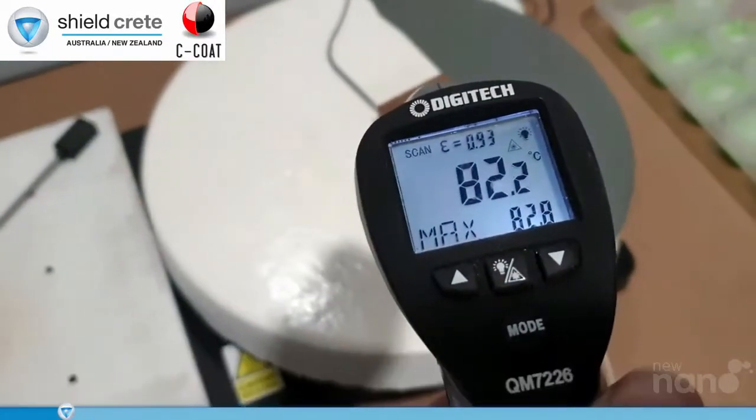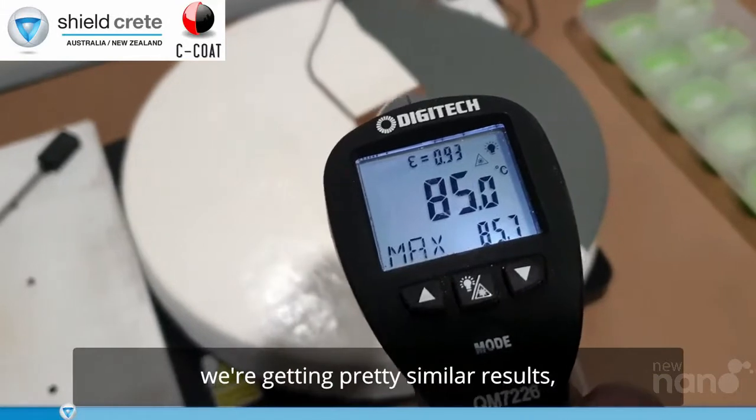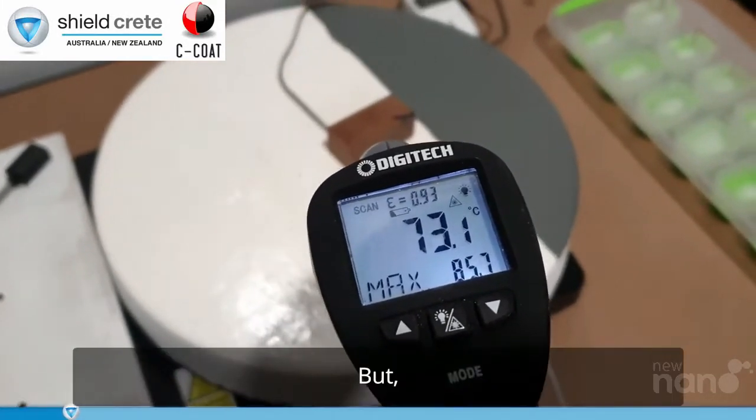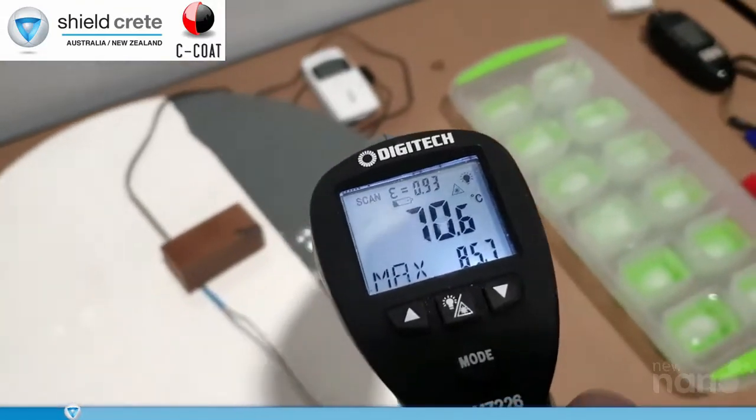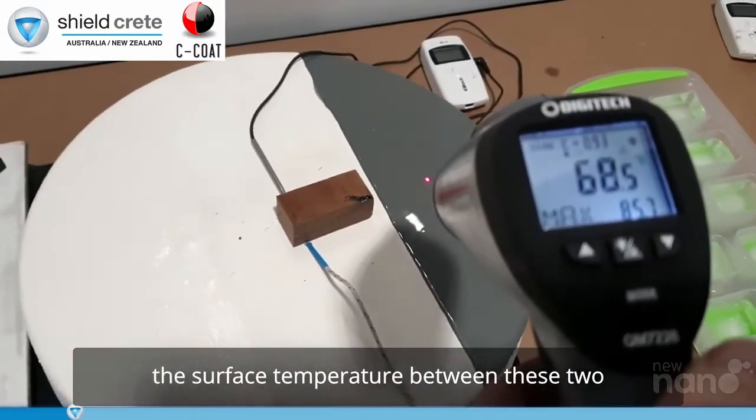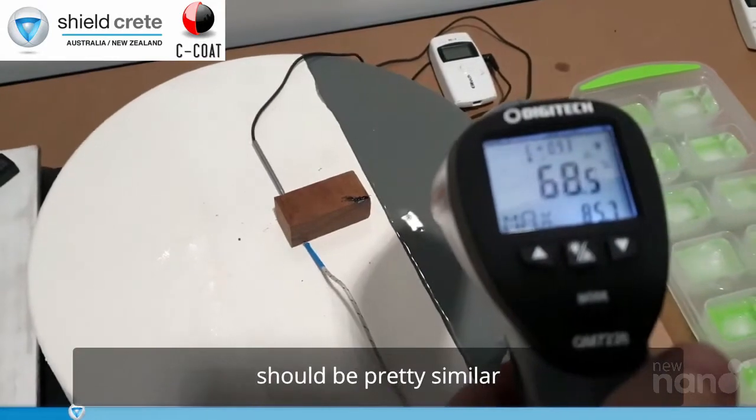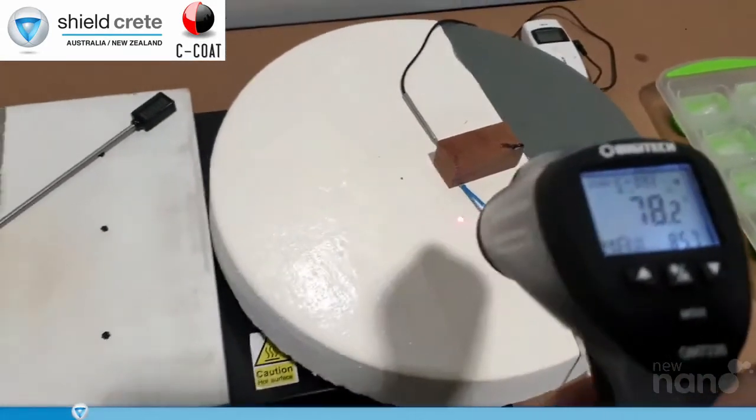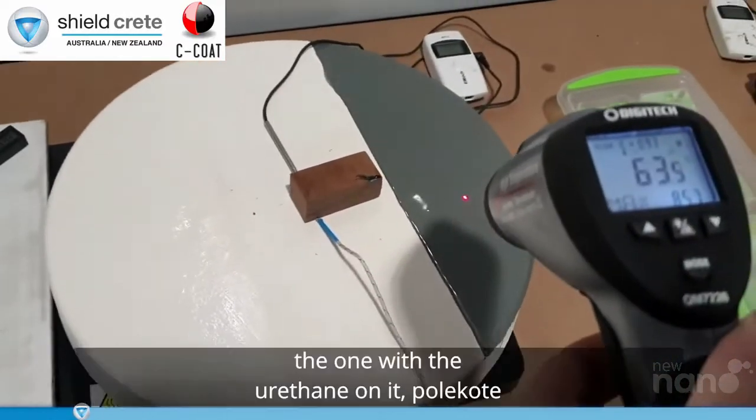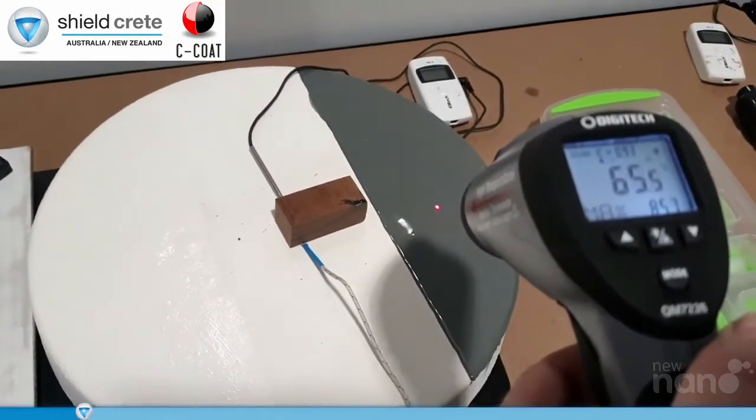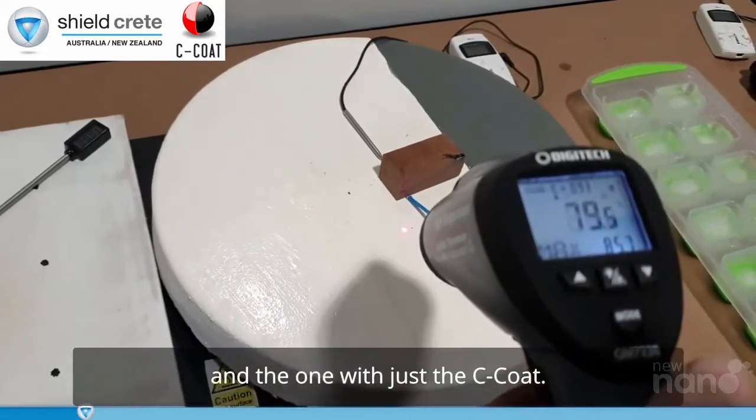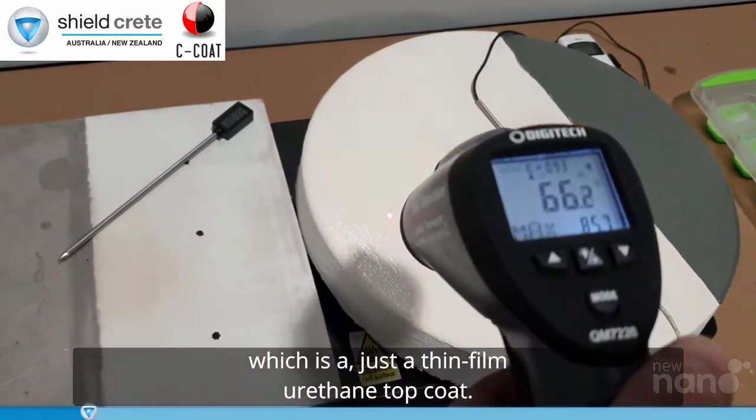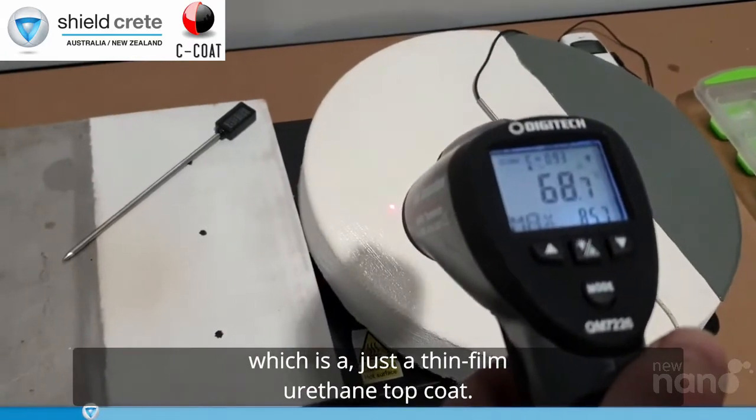If we use the laser thermometer we're getting pretty similar results, maybe a little bit higher, but look what happens. The surface temperature between these two should be pretty similar but you get a big difference between the one with the urethane on it, pole coat, and the one with just the C-coat. And there will be a little bit of difference as well there which is just a thin film urethane top coat.